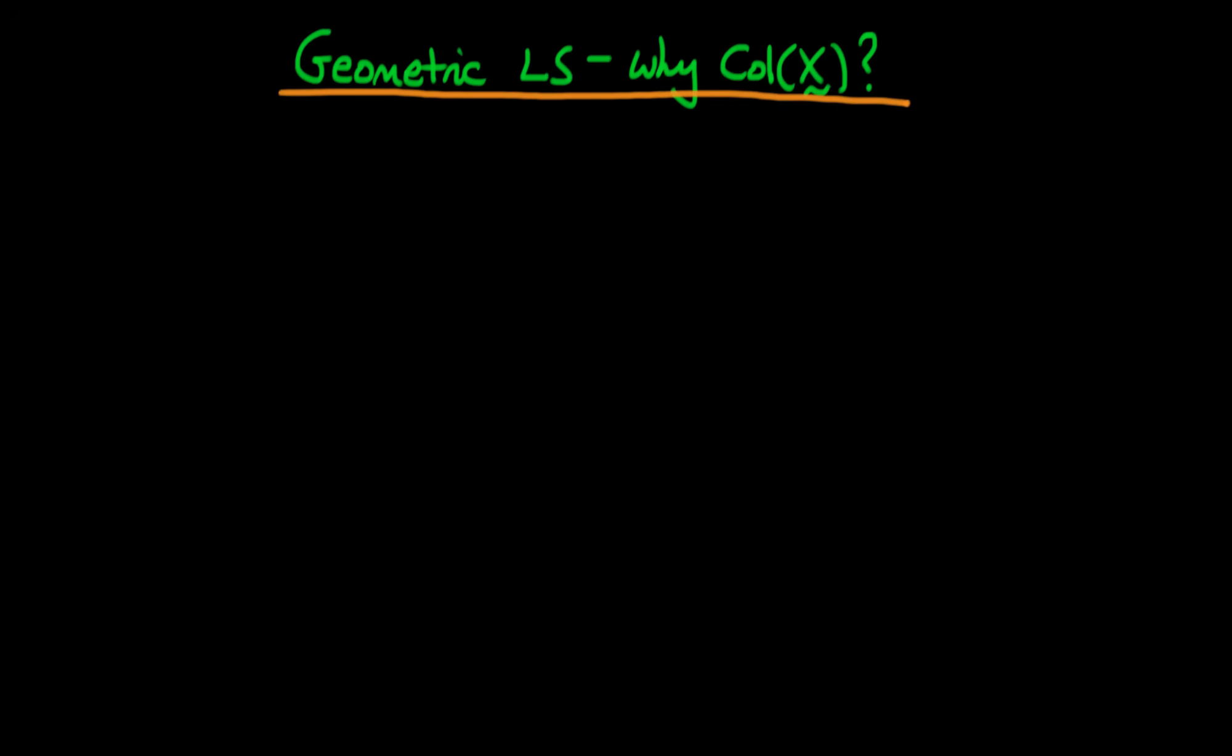In this video, I want to provide a little bit more intuition as to why we can think about least squares geometrically. In particular, I want to explain why we can think about the column space of the matrix of independent variables X as representing a kind of vector space.